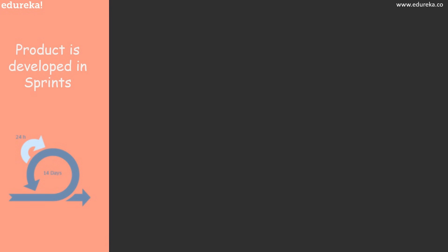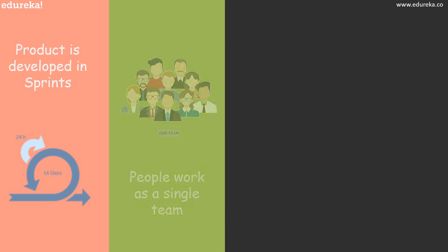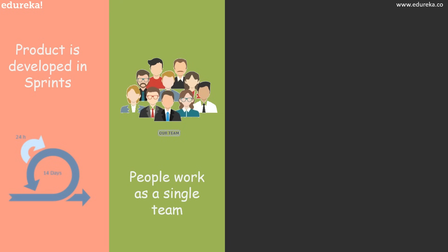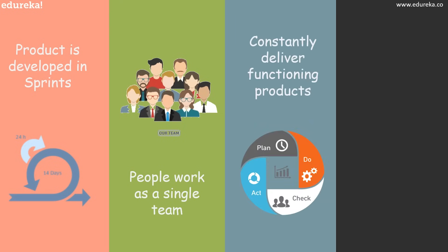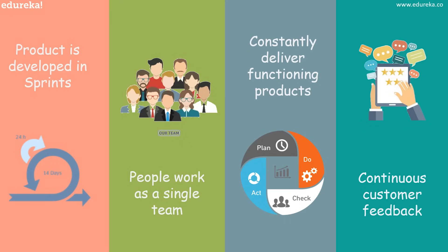With Scrum, you write fewer plans and do more in short iterations or cycles called sprints. You don't work in separate groups but as one dedicated, committed team. Instead of working toward a distant deadline, you constantly deliver functioning products, and instead of a final evaluation, you receive continuous feedback from customers and improvise your product. That's what reviewing and adapting along the way means.